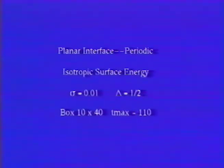For a planar interface, only one growth direction is possible. With isotropic surface energy, the fingers introduced in the initial data compete until only one survives. Then that one undergoes tip splitting. The screen shows three computational periods.